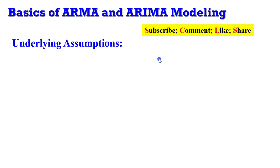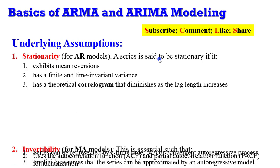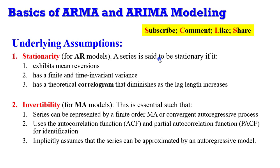There are two underlying assumptions of ARMA and ARIMA modeling. The first is that the series must be stationary — it must exhibit mean reversion, have a constant variance, and a theoretical correlogram that diminishes as the lag increases. The second is the invertibility assumption, which is peculiar to the moving average component, requiring the series to be representable by a finite order moving average and approximated by an autoregressive model.